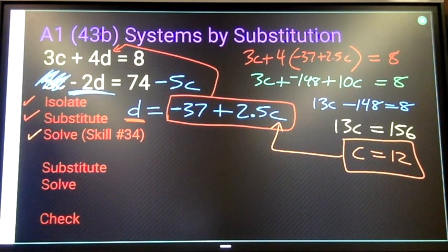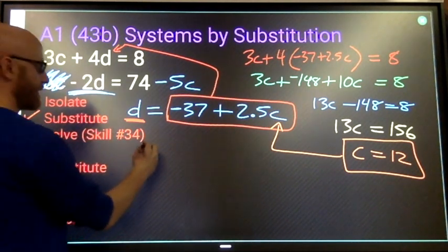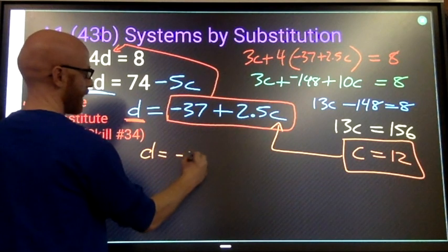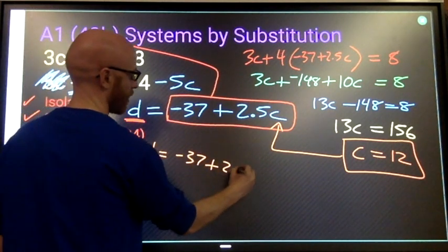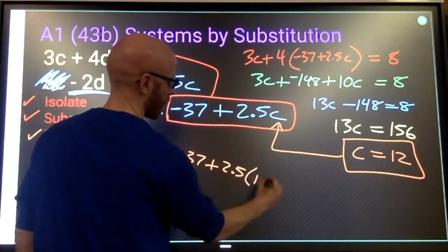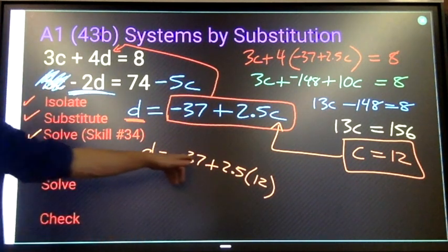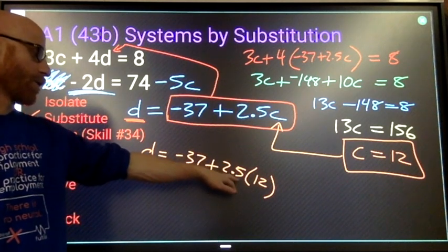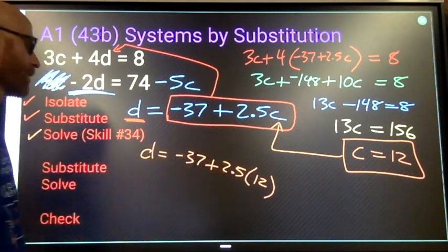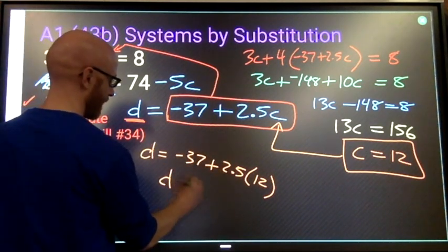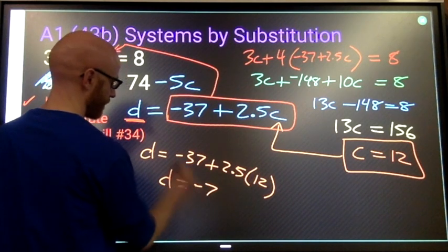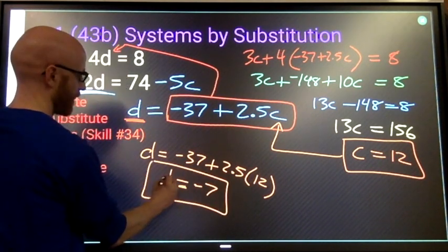Substitute in here. So we've got d equals negative 37 plus 2.5 times 12. Do the math. 2.5 times 12 is 30 plus negative 37 is negative 7. D is negative 7.